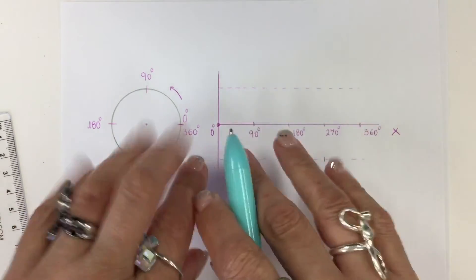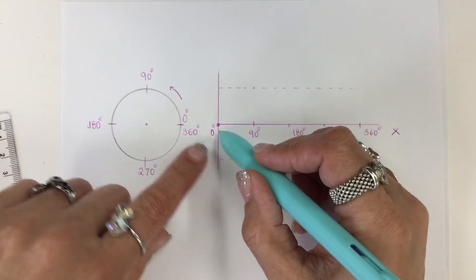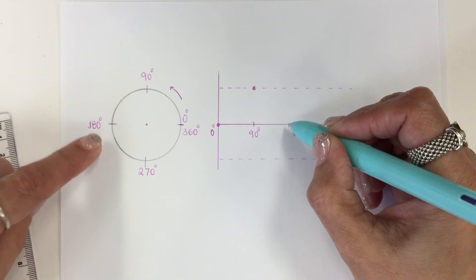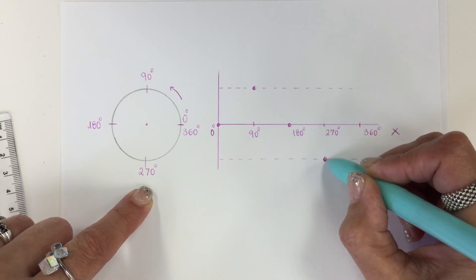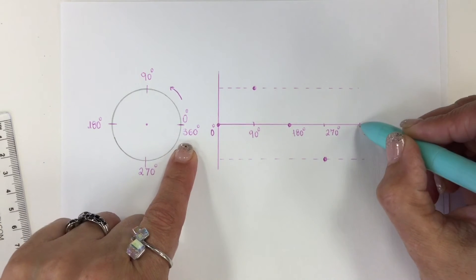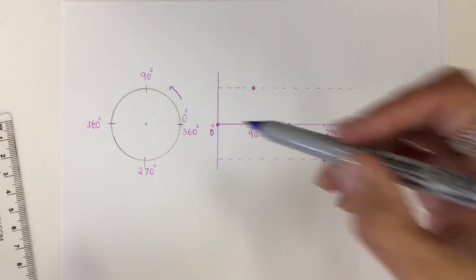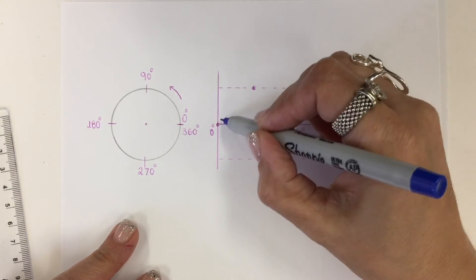Now we are going to make a drawing based on this motion: 0, then we went to 90 degrees, then 180 degrees, 270 degrees, and finally 360 degrees. Now I'm going to connect all these dots.